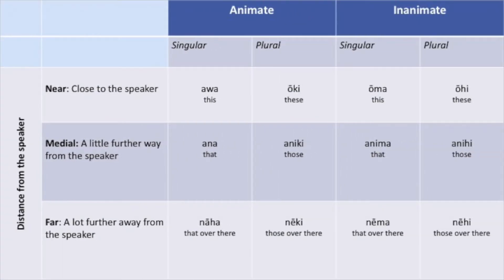In this chart we see a table. On the top it says animate or inanimate. Just under it, is it singular or plural for animate nouns, or is it singular or plural for inanimate nouns? And on the left side we have the distance markers: Is it near to the speaker? Is it a little further away from the speaker? Or is it a lot further away from the speaker?